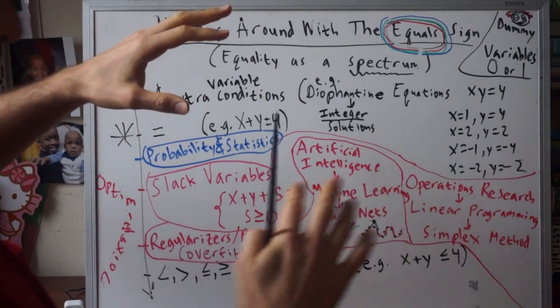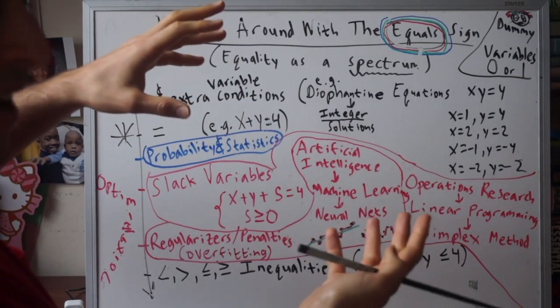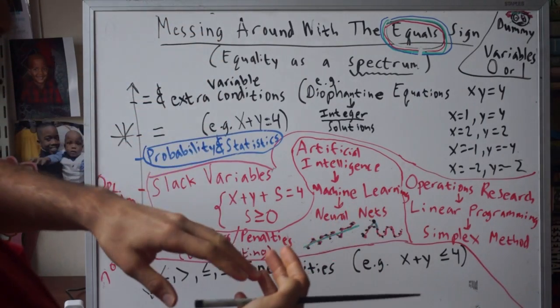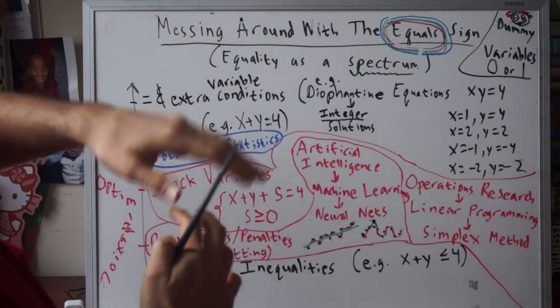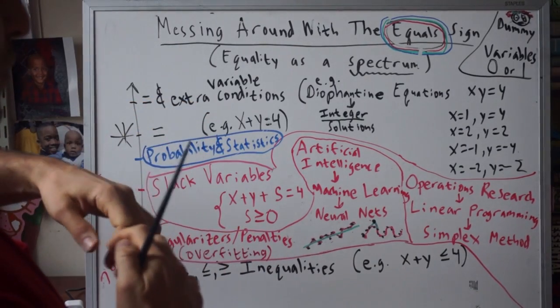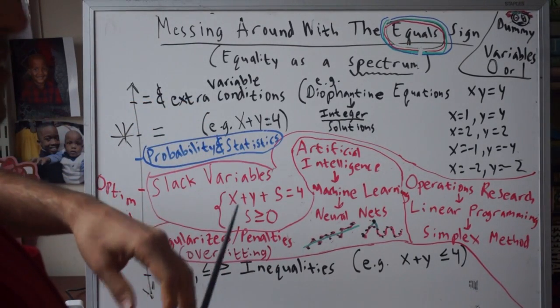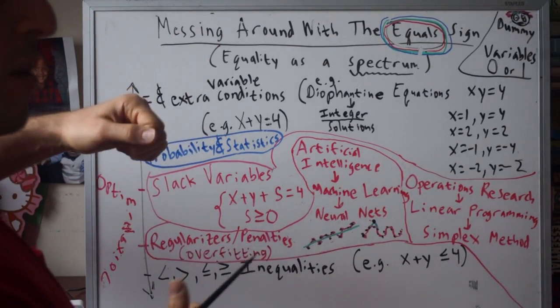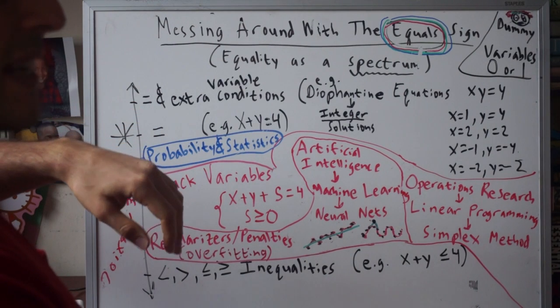There's a trade-off between fitting your data perfectly and having a really simple model. Sometimes too simple is oversimplified, and sometimes if you fit all the data then it's so complex that you haven't learned anything.